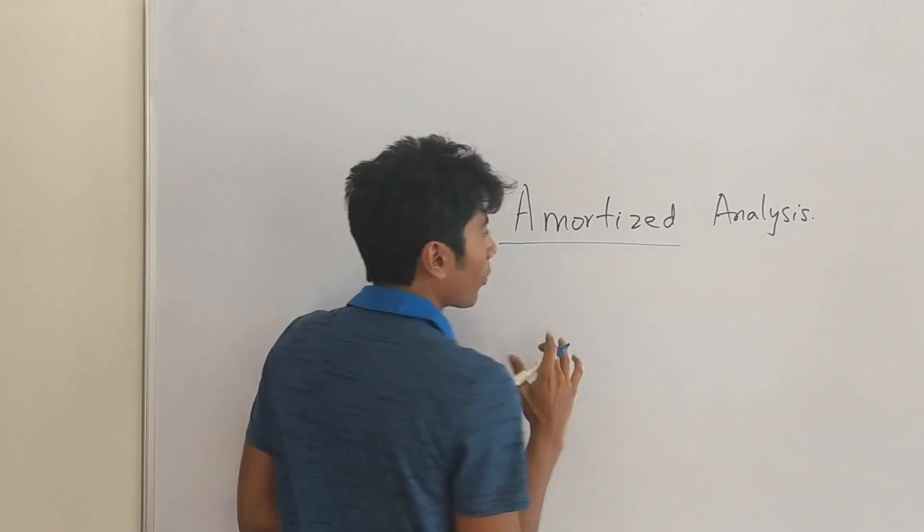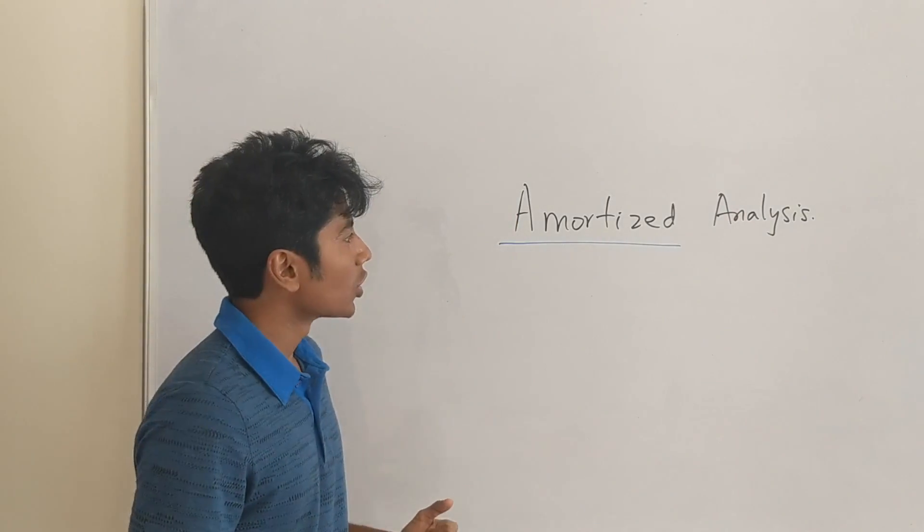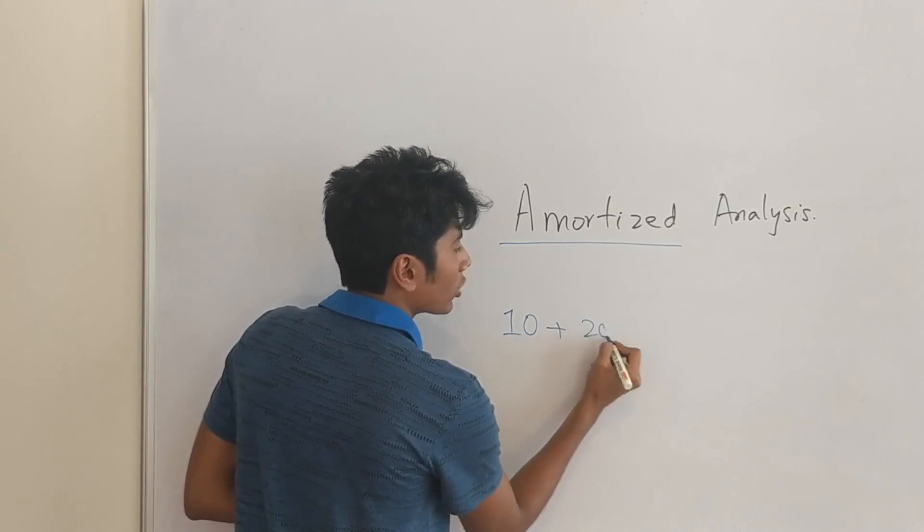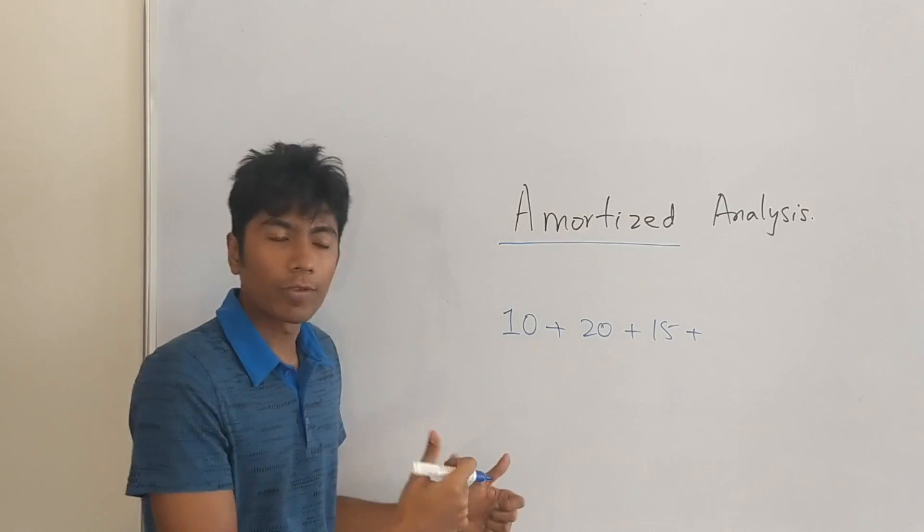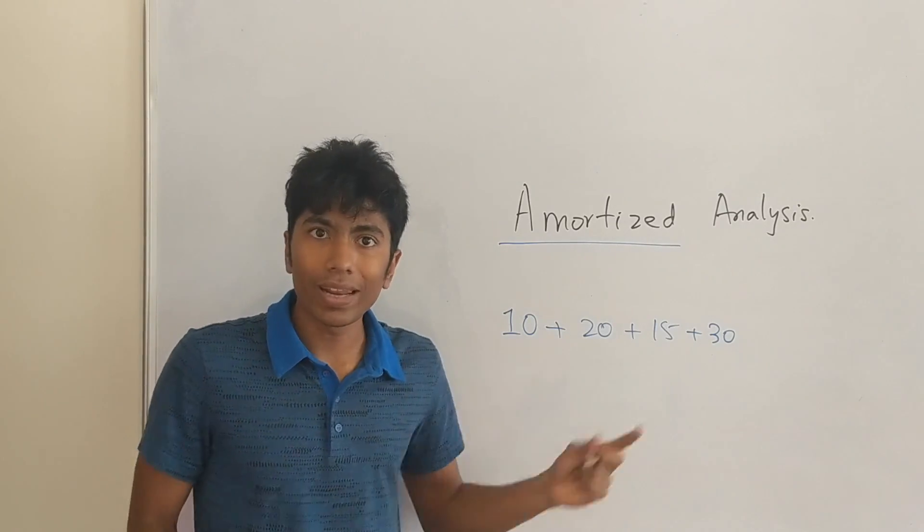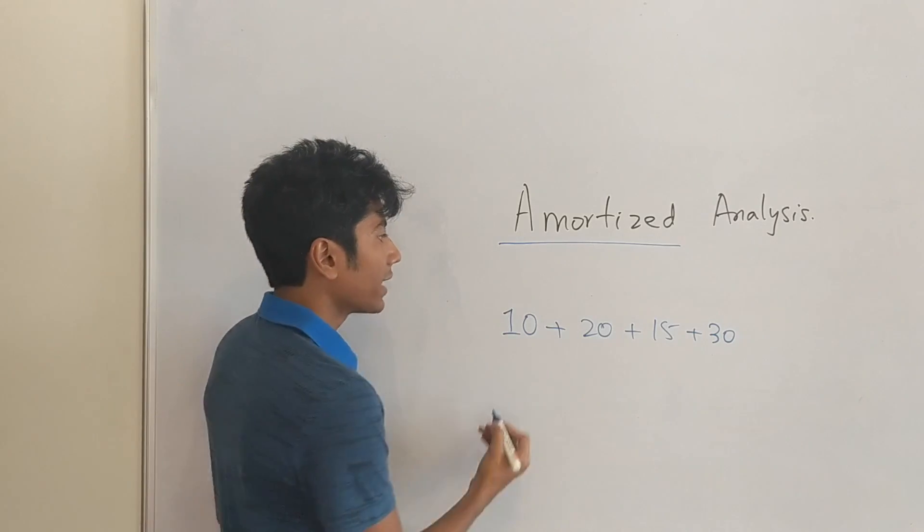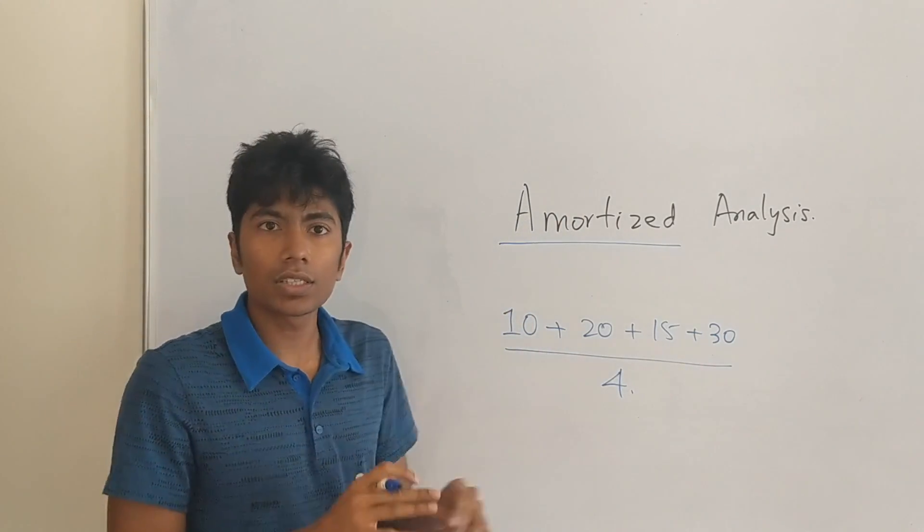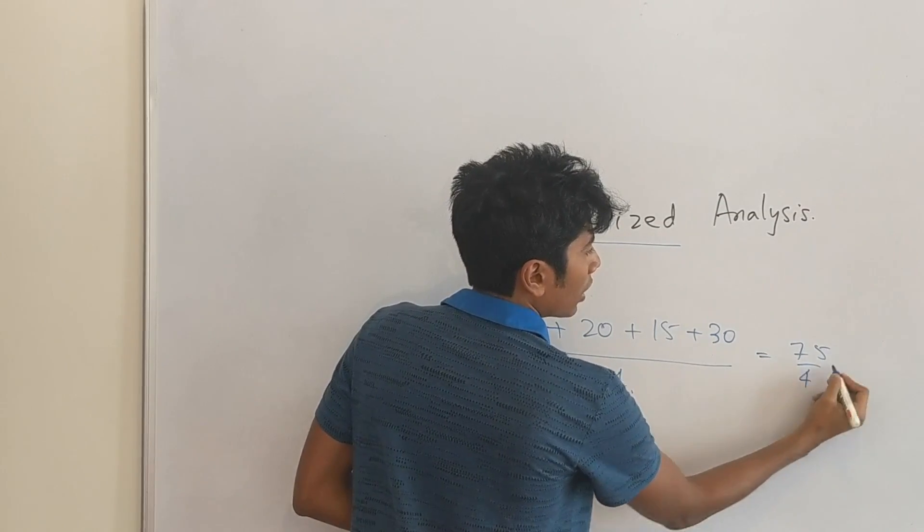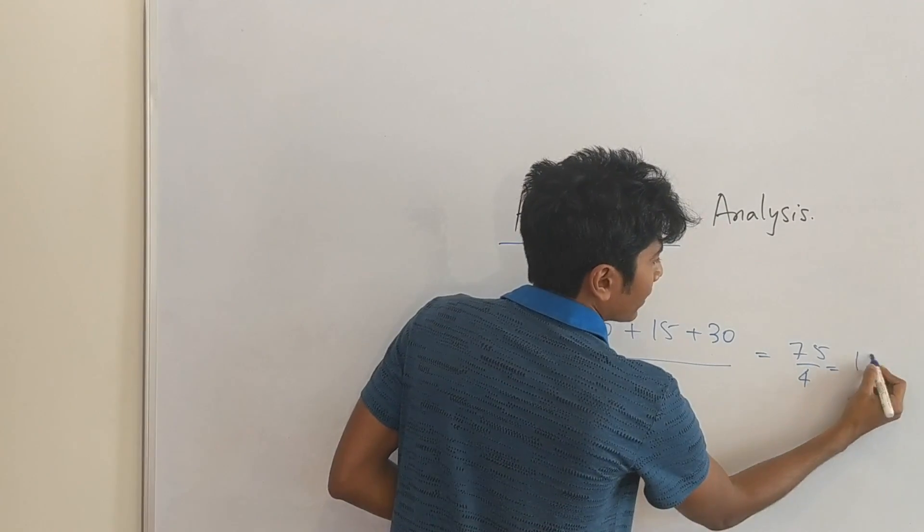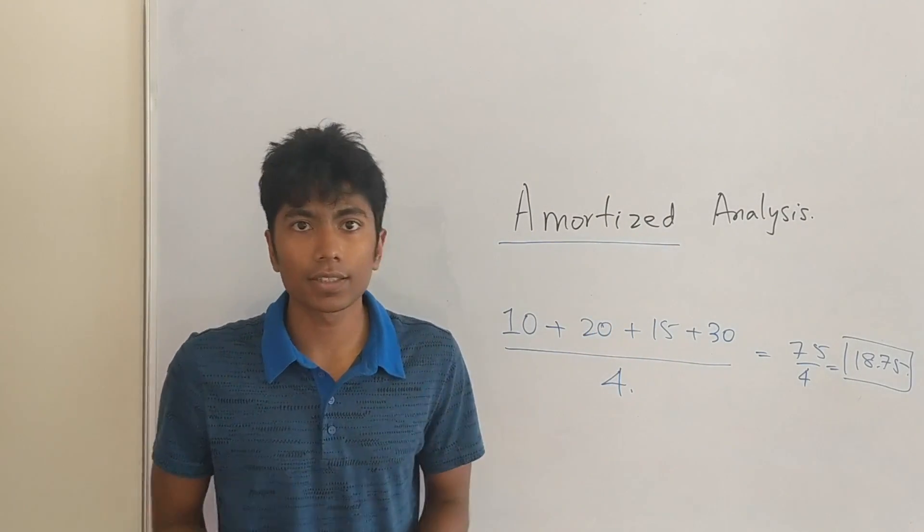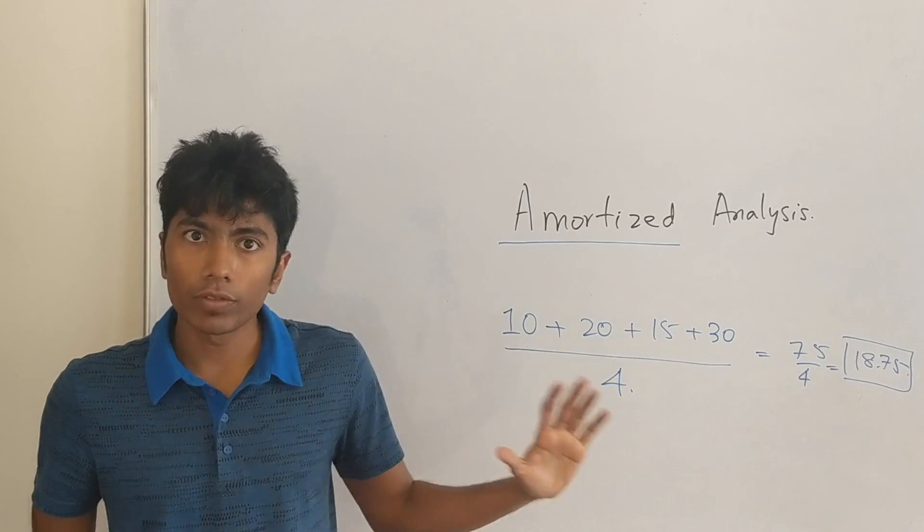Amortized literally means taking the cost of an operation over an extended period of time. So let's say you are buying a stock. This costs 10 rupees today, tomorrow it's going to cost you 20 rupees, day after it's going to cost you 15, and after that it's going to cost you 30. So amortized says that you take the cost of buying this stock over an extended period of time which is these 4 and then you divide it by the number of times you bought it. It's pretty simple, it's just the average. So 30, 60, 75 by 4 which is around 19. So the cost of buying this stock was 18.75. And this is what amortized analysis is.